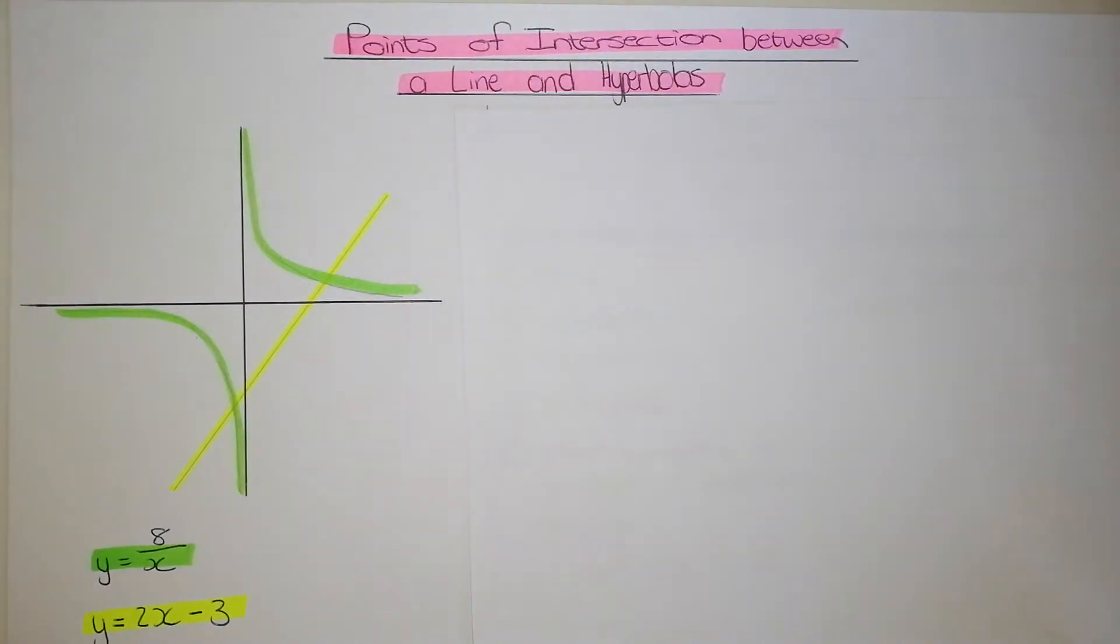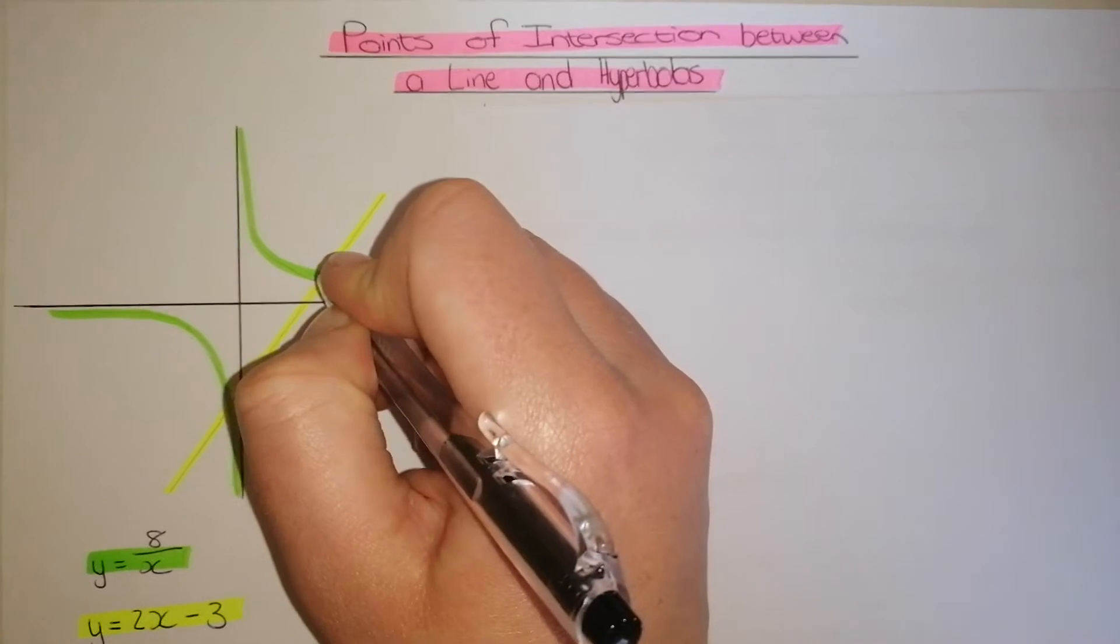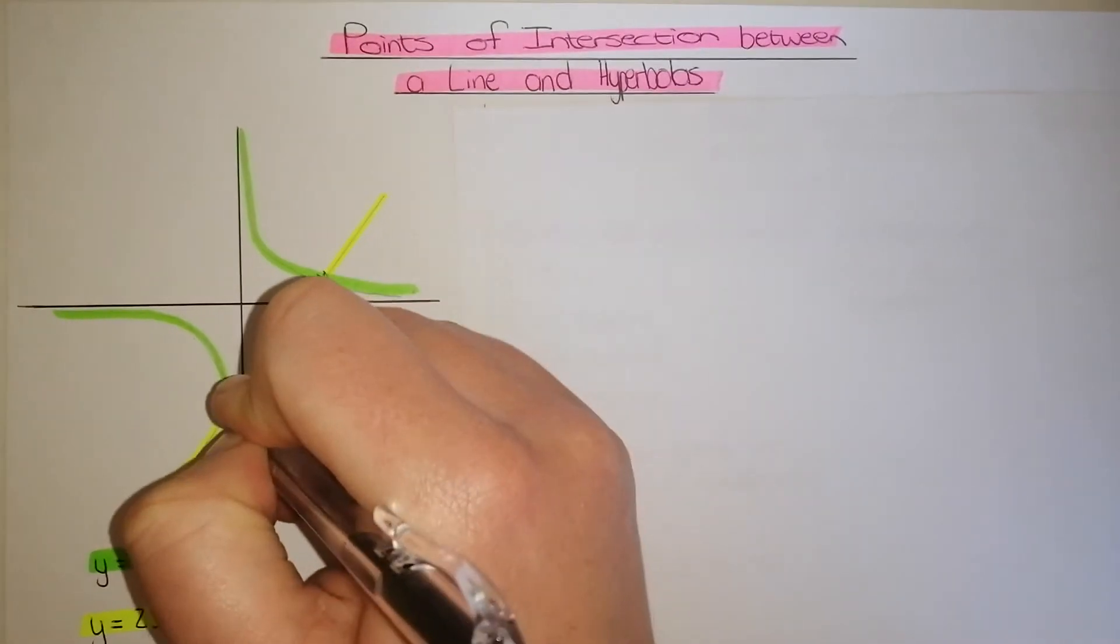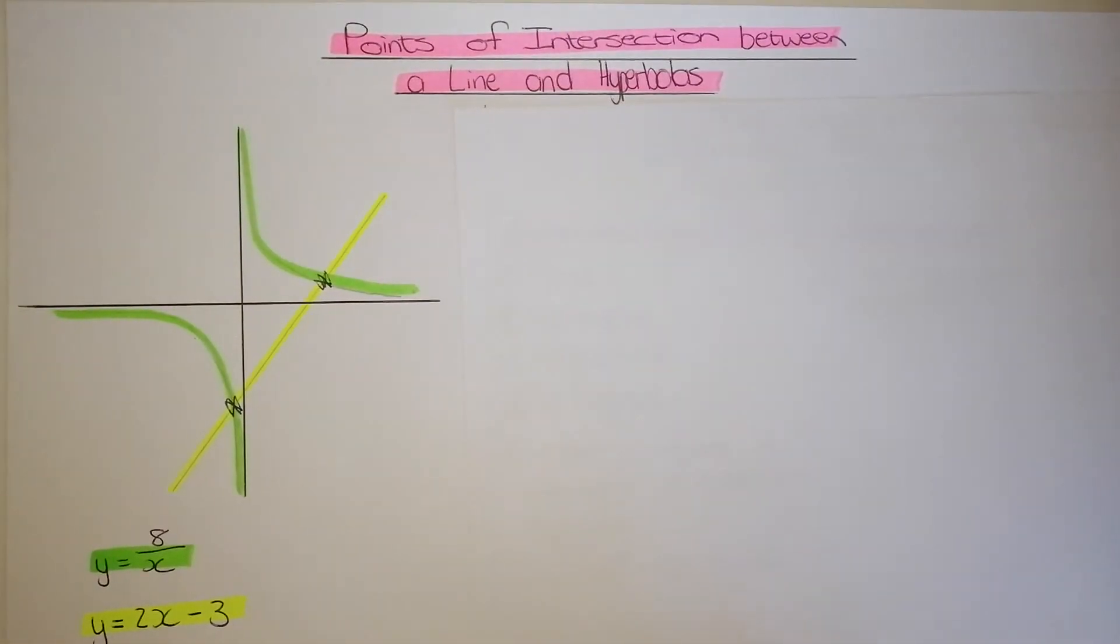Finding the points of intersection between a hyperbola and a straight line. It's very important to identify how many points of intersection there will be. When looking at these two equations and the graph, we can see that the hyperbola is in green and the straight line is in yellow. The points of intersection would be up there, as well as down there, which means we're going to need two points of intersection.